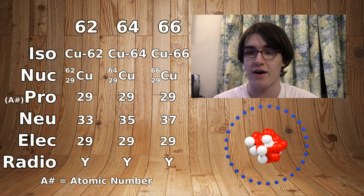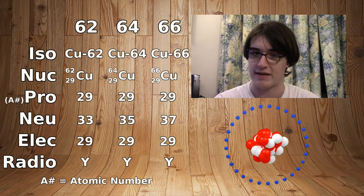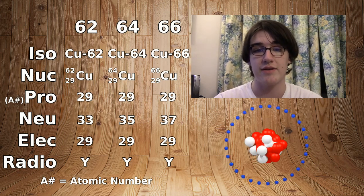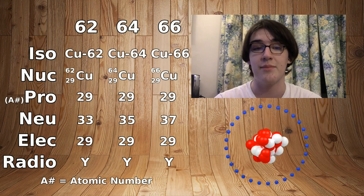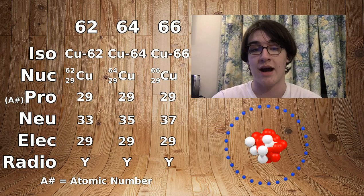They have 33, 35, and 37 neutrons respectively. They all have an atomic number of 29 because they are all still copper.